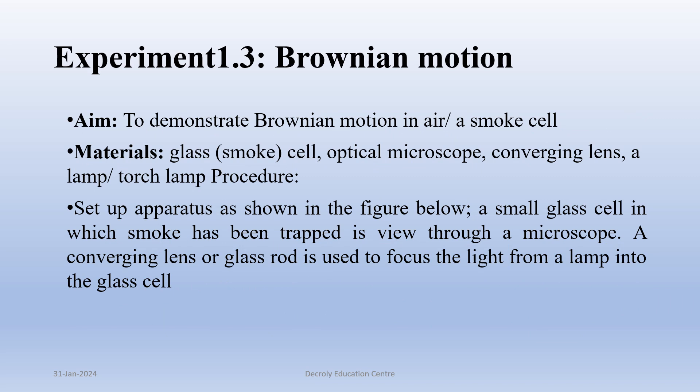Experiment 1.3: Brownian motion. Aim: to demonstrate Brownian motion in air using a smoke cell. Materials: glass smoke cell, optical microscope, converging lens, and a lamp or torch lamp.